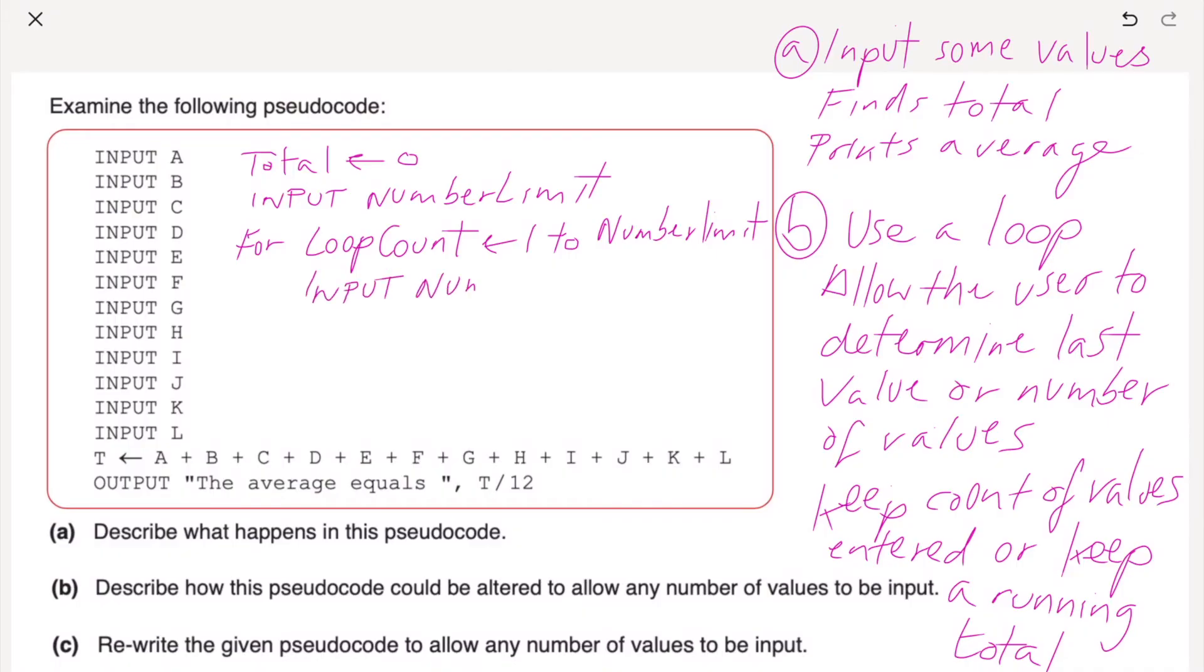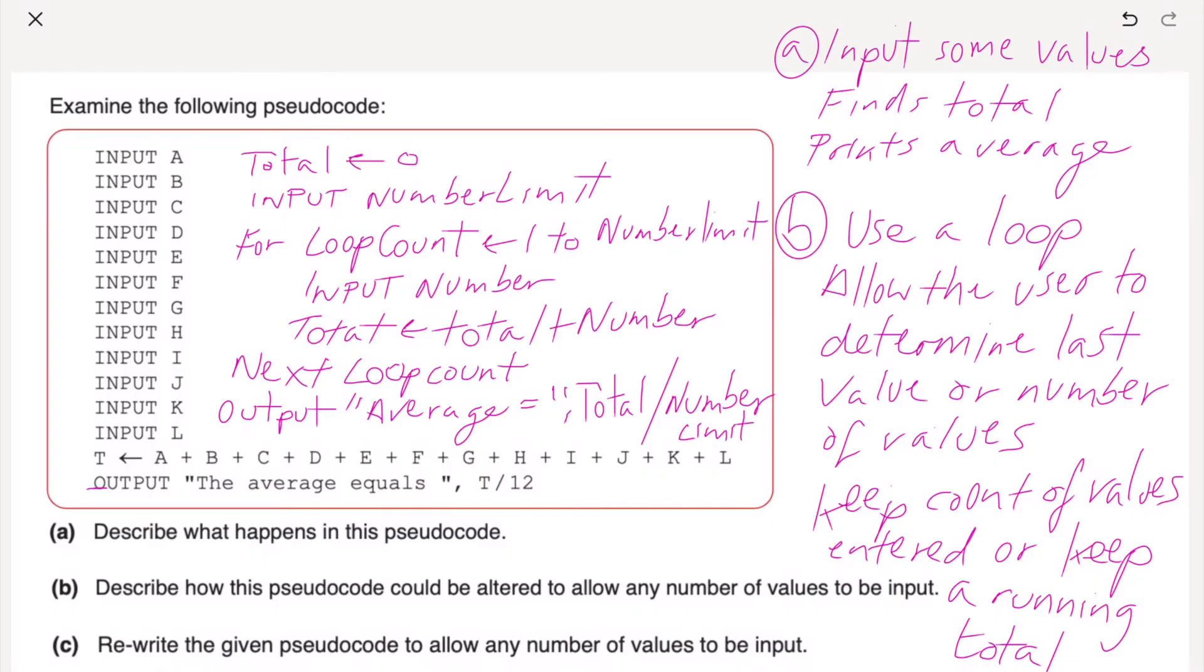So total, assign the value zero, input number limit, for loop count, assign one to the number limit. And then what we're going to do, we're going to input a number, one of these numbers. And then I've got to make the total grow. So total, we need to assign the value total plus number. Input number, total is total plus number. And then we're going to go next, because it's a for loop. Next loop count. And then finally I've got to do this, so I'm going to output this message: output average equals, and then I'll put a comma in there, total divided by, because it's an average, divided by whatever we put in for the number limit, so number limit.